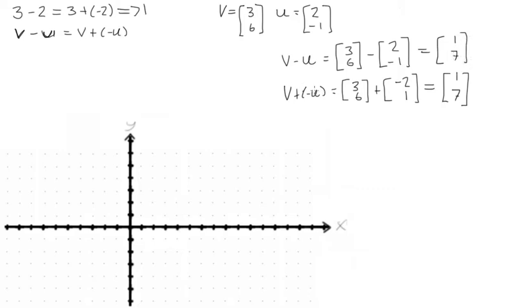But the reason we do it this way is we'll show you graphically. So if we want to plot vectors v and u, vector v is 3, 6, so 1, 2, 3, 1, 2, 3, 4, 5, 6, like so. This is vector v.